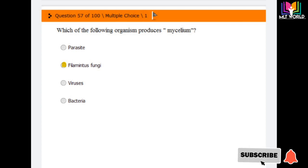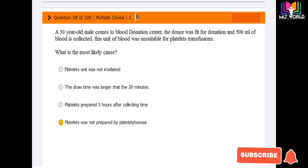Question number 58: A 30-year-old male comes to blood donation center. The donor is fit for donation and 500 ml of blood is collected. This unit of blood was unsuitable for platelet transfusion. What is the most likely cause? Options are platelet unit was not irradiated, the draw time was longer than 20 minutes, platelets were prepared five hours after collection time, and platelets were not prepared by plateletpheresis method. The correct answer is last option. Platelets were not prepared by plateletpheresis.